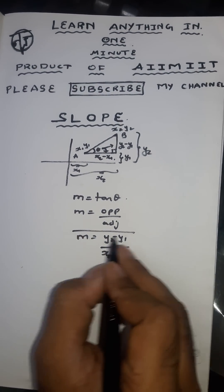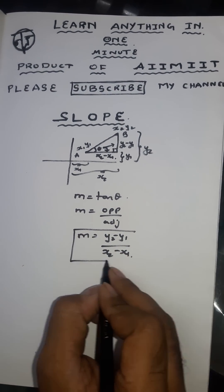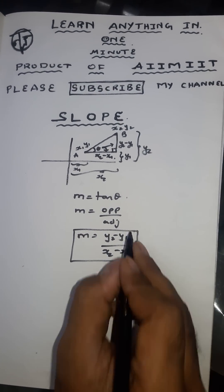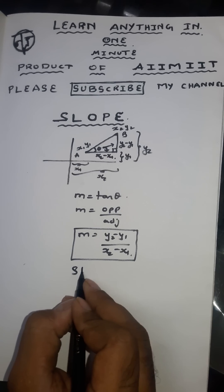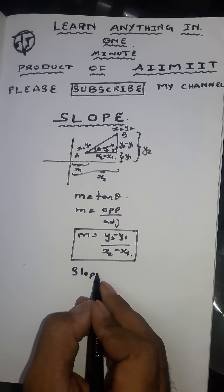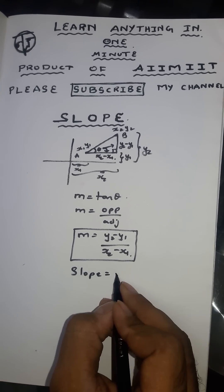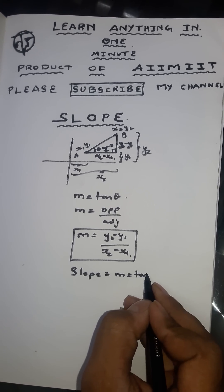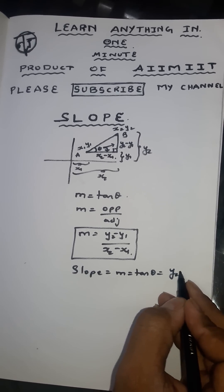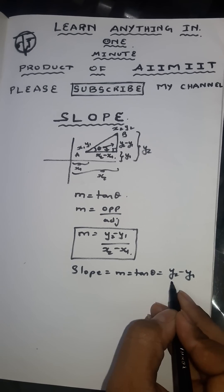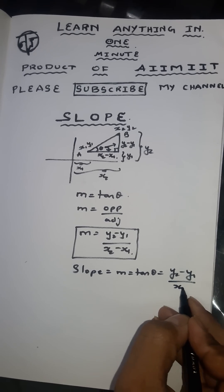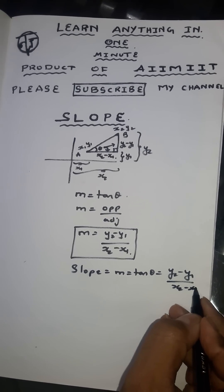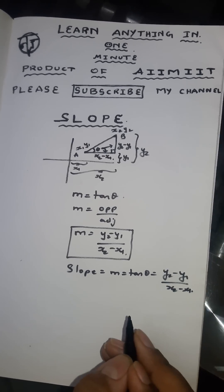This is the derivation for slope. Slope is equal to m is equal to tan theta is equal to y2 minus y1 by x2 minus x1. Thank you.